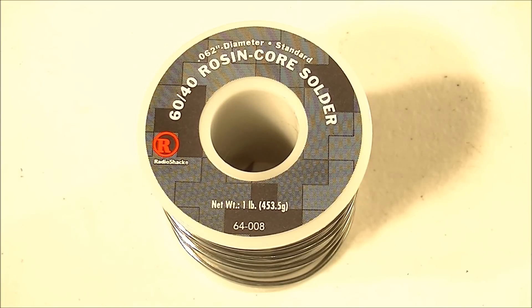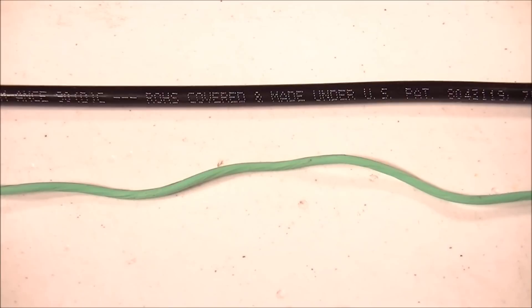Rosin core solder also comes in different tin to lead ratios resulting in different melting temperatures. For general applications using medium to large gauge wire I use 60-40 because that has a melting point of about 370 degrees.